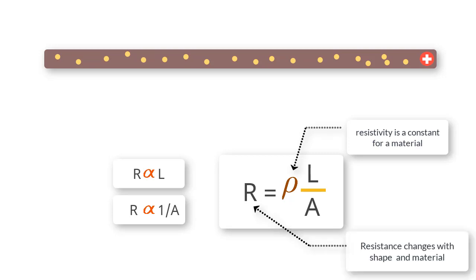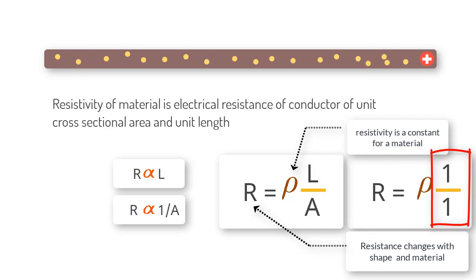More formally, we could define resistivity of a material as electrical resistance of a conductor of unit cross sectional area and unit length because if you put unit value for L and A, what you get is the resistance value for that dimension.